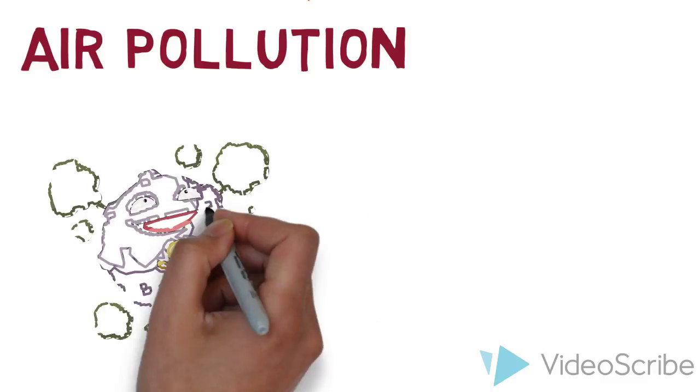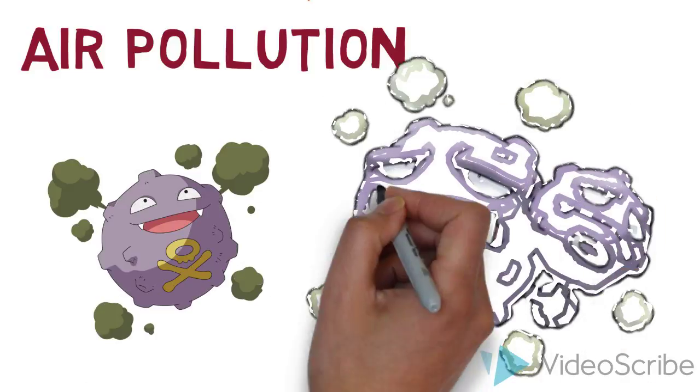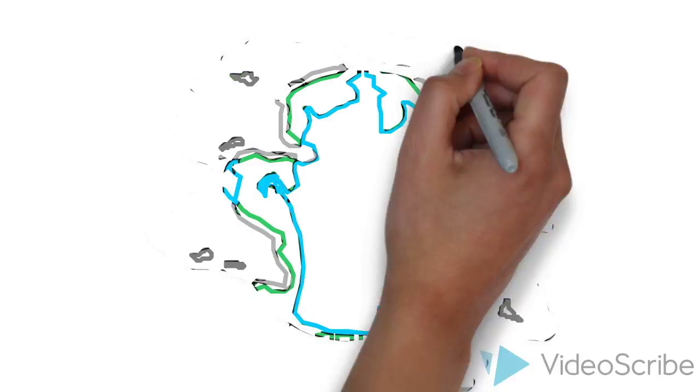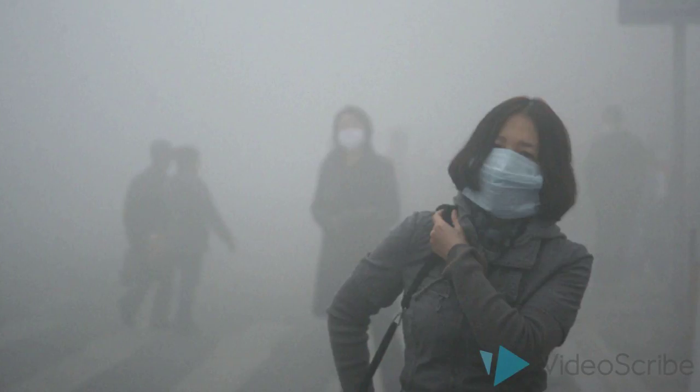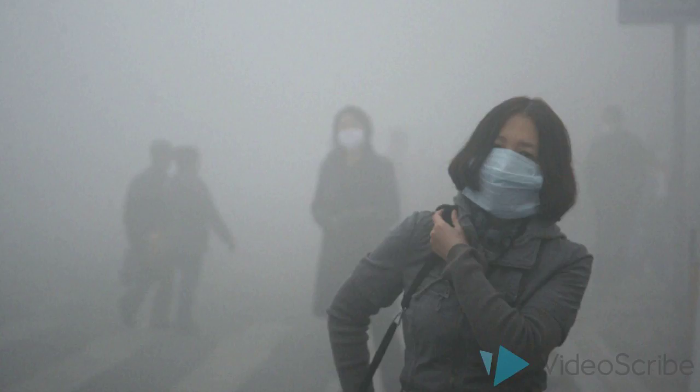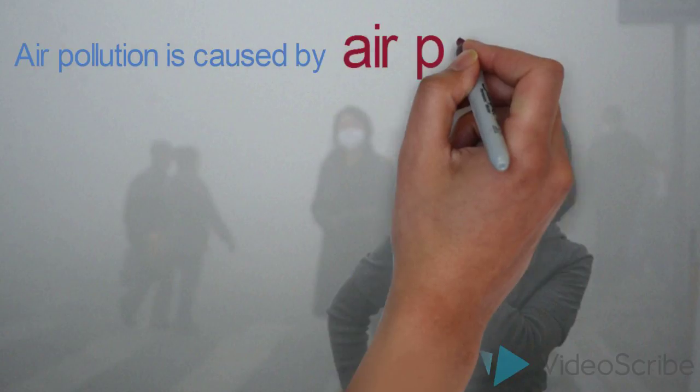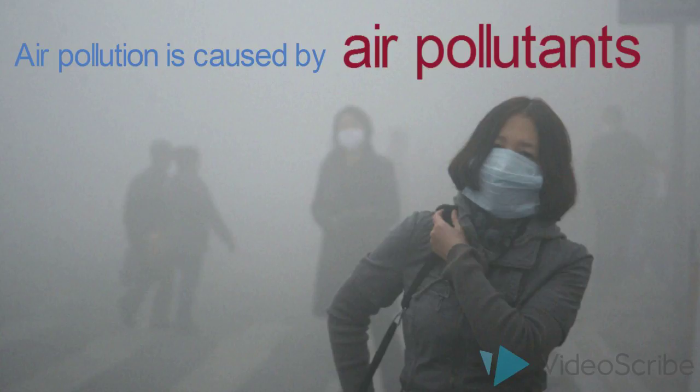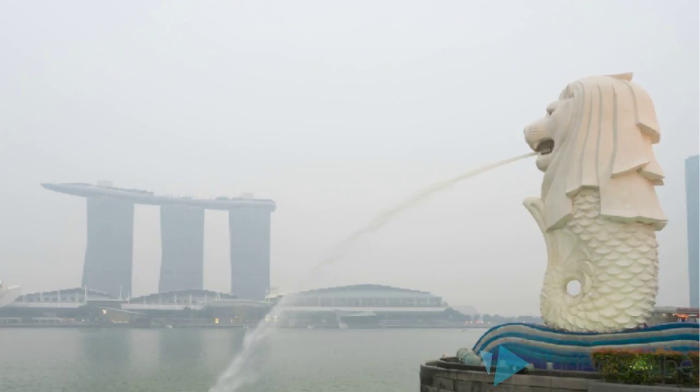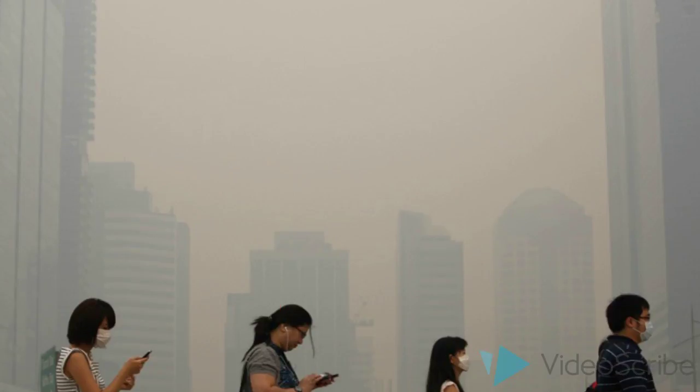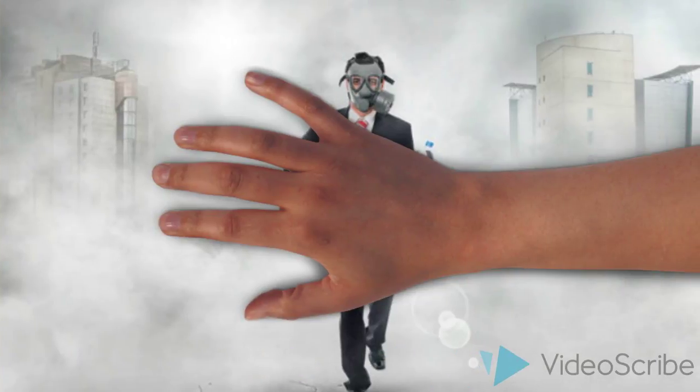Besides learning about the composition of air, another important concept is air pollution. Much of the air that we breathe in is not clean as they have already been polluted. Pollution is the condition in which the air contains a high concentration of certain chemicals that can harm living or non-living things. And such substances are called air pollutants. If you recall, Singapore has also been affected by air pollution greatly over the past few years. Therefore, it is important for us to understand what causes air pollution and what are some of the harmful impacts of air pollution.